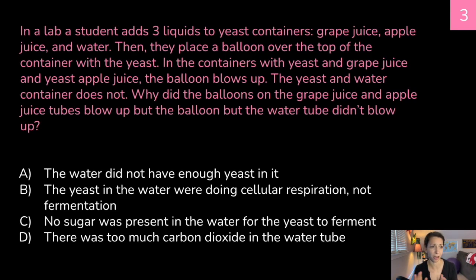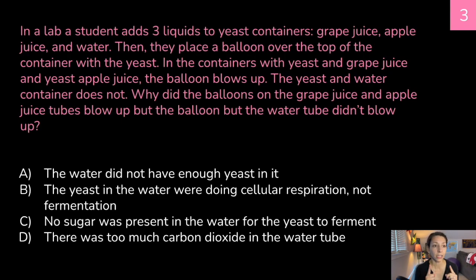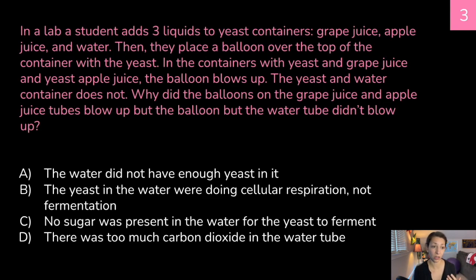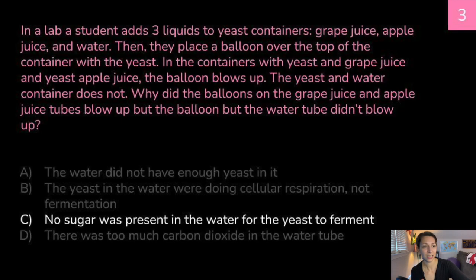Practice question three — it's a little long but not that hard. In a lab, a student adds three liquids to yeast containers: grape juice, apple juice, and water. They place a balloon over the top of each container. In the containers with yeast and grape juice, and yeast and apple juice, the balloon blows up. The yeast and water container does not. Why did the balloons in the grape juice and apple juice tubes blow up, but the water tube balloon didn't? A) the water did not have enough yeast, B) the yeast in the water were doing cellular respiration not fermentation, C) no sugar was present in the water for the yeast to ferment, or D) there was too much carbon dioxide in the water tube. The correct answer is C — no sugar was present in the water for the yeast to ferment.